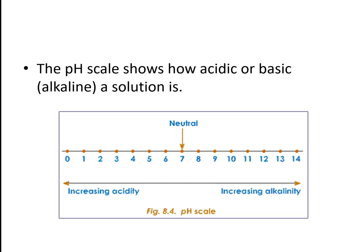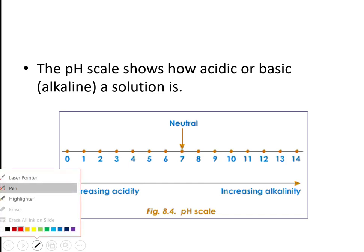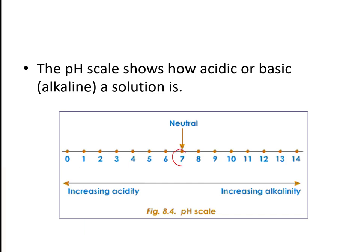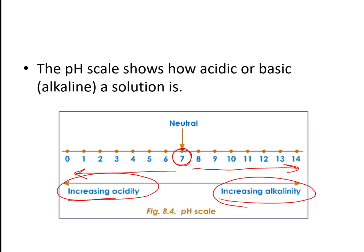If you look at the pH scale, you have neutral right here at seven. As we go further away from seven towards zero, we become increasingly acidic, and as we move away from seven towards 14, we become increasingly alkaline. So generally this is our acid range, and this would be our base range.